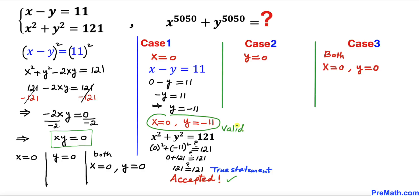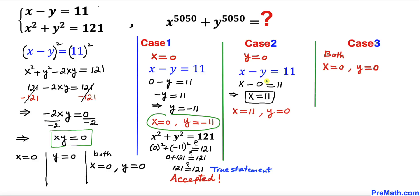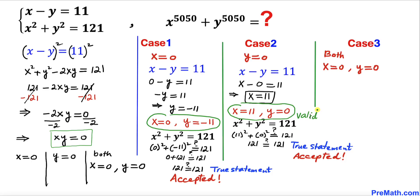Case 2: when y equals 0. Plugging into equation 1 gives x minus 0 equals 11, so x equals 11. For this scenario, x equals 11 and y equals 0. Checking in equation 2: 11 squared plus 0 squared equals 121 — this is a true statement, so we accept this scenario as well.